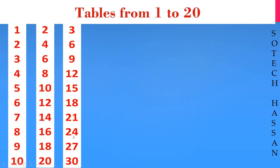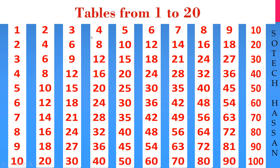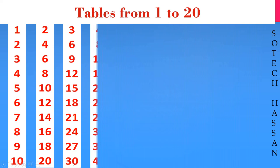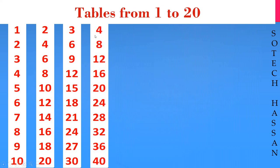3 8s are 24, 3 9s are 27, 3 10s are 30. Fourth table: 4 1s are 4, 4 2s are 8.